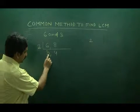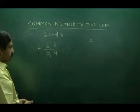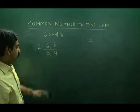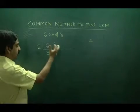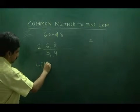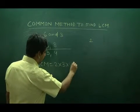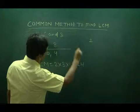There is no other number which is common to 3 and 4 or by which we can divide 3 and 4. So LCM is 2 into 3 into 4 is equal to 24.